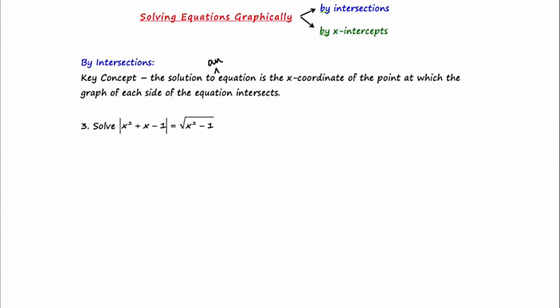This is our third and final example of solving an equation graphically by the intersection method. This particular equation is really kind of challenging. They want us to solve the absolute value of x squared plus x minus one equals the square root of x squared minus one. But believe it or not, this is actually going to be the quickest problem that we're going to solve in the three examples that I've shown you.